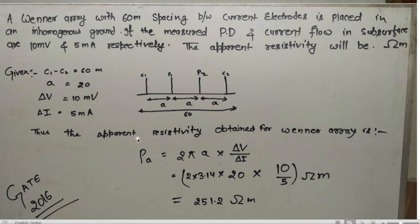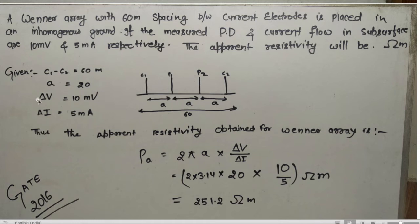For this question, the formula needed is: apparent resistivity ρ = 2πa × (ΔV / ΔI). The distance between C1 and C2 is 60 meter, so we divide by 3 (since electrode spacings are equal), giving a = 20 meters. The potential difference is 10 millivolt and the current is 5 milliampere.